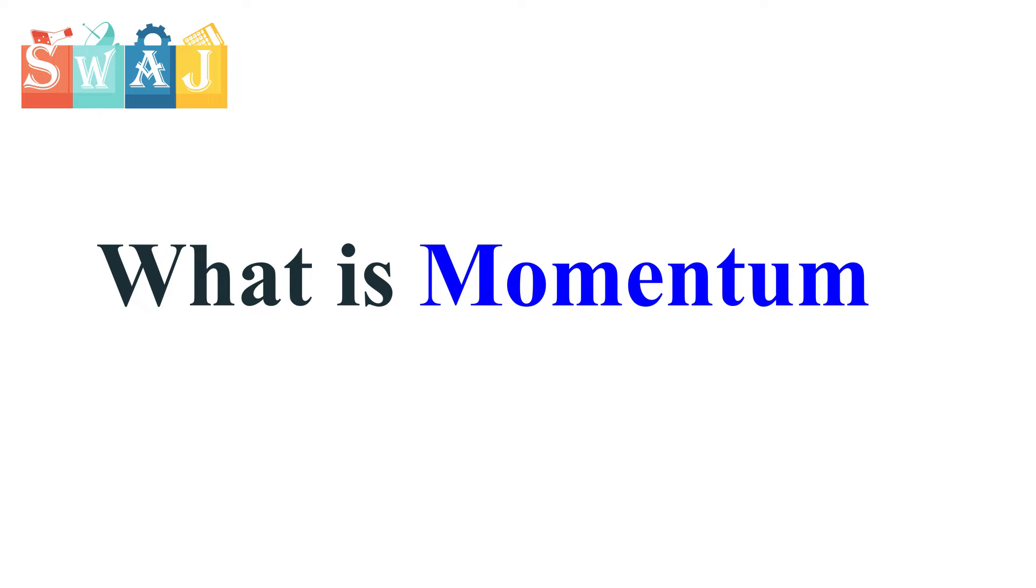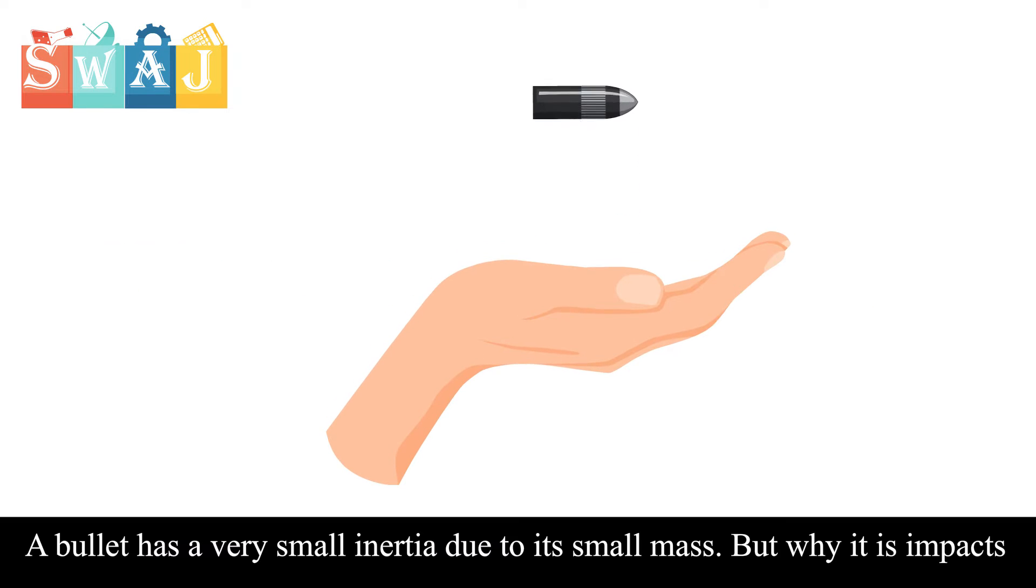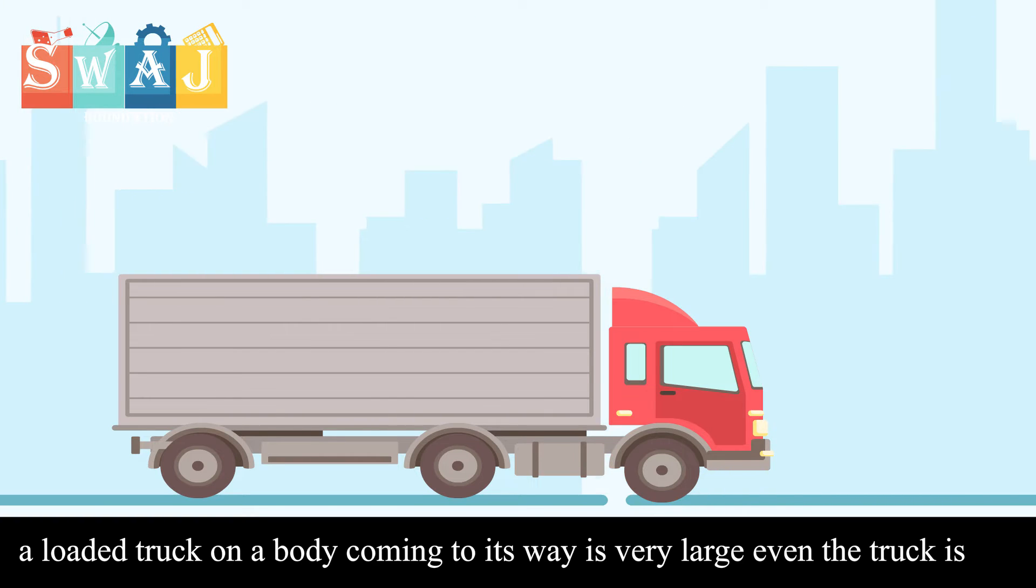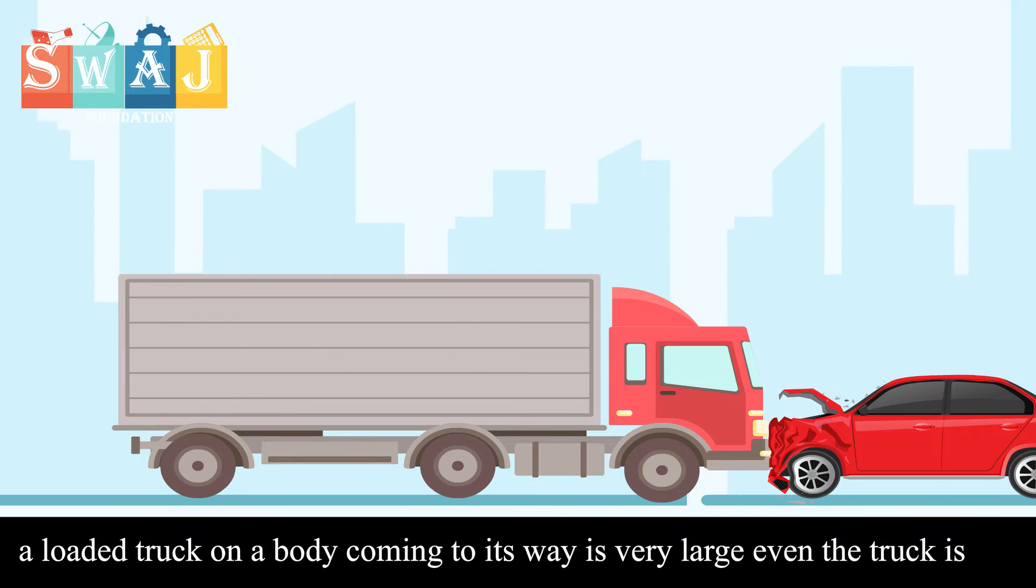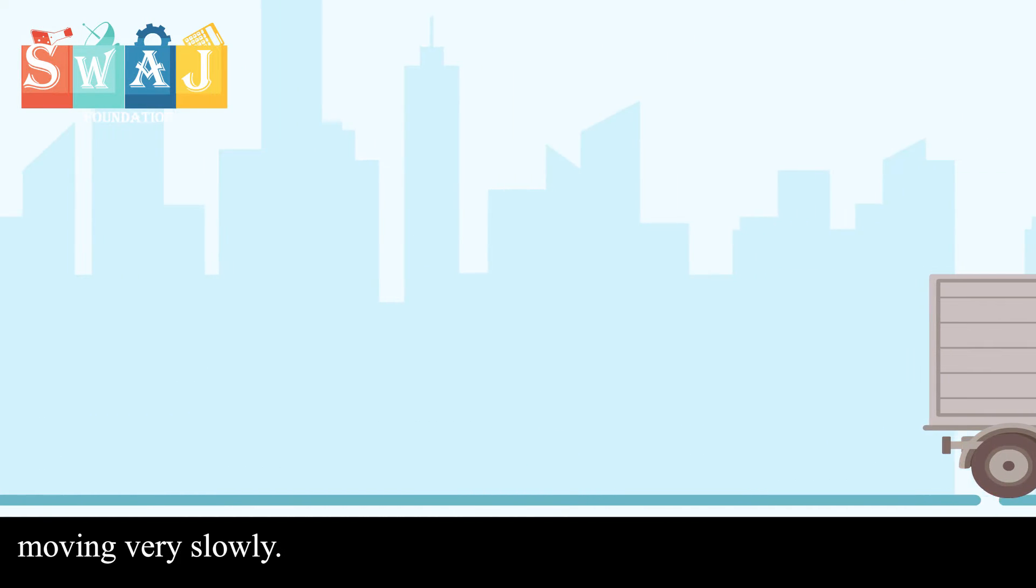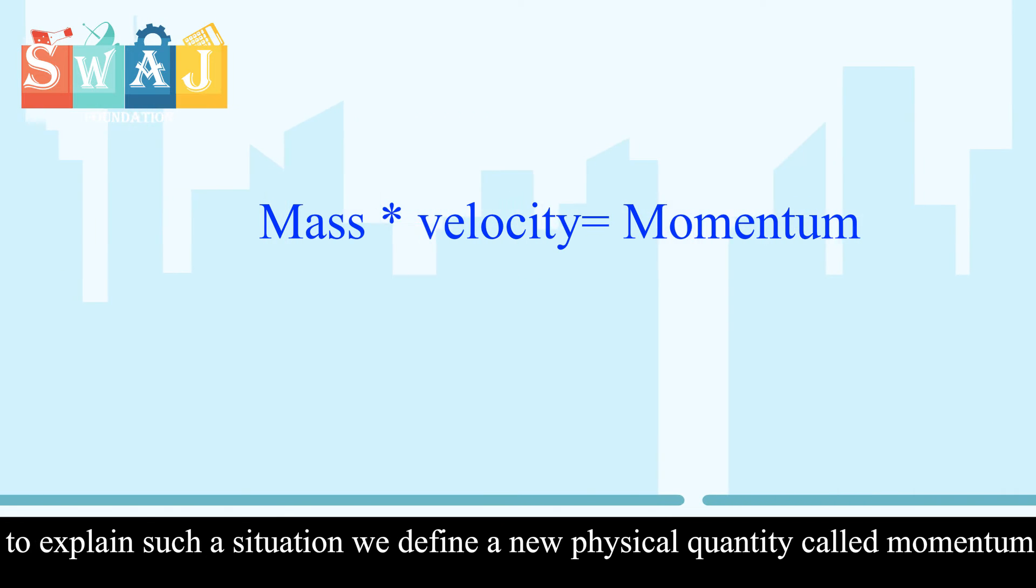What is momentum? A bullet has a very small inertia due to its small mass, but why is its impact so strong when it is fired from the gun? On the other hand, the impact of a lorry truck on a body coming in its way is very large even if the truck is moving slowly. To explain such a situation...